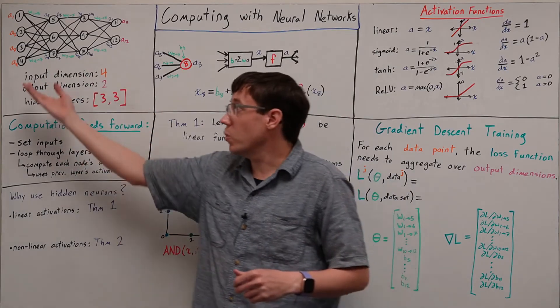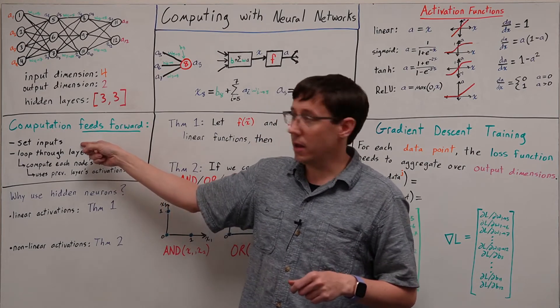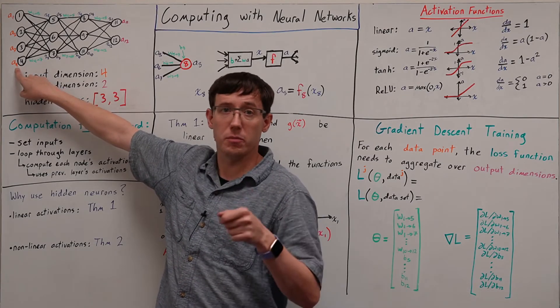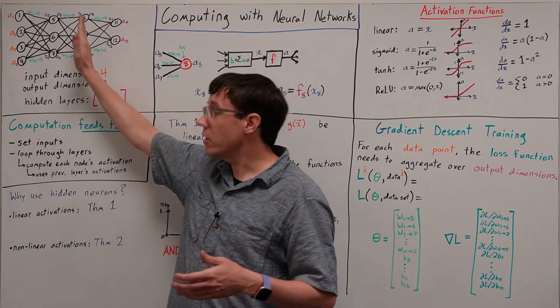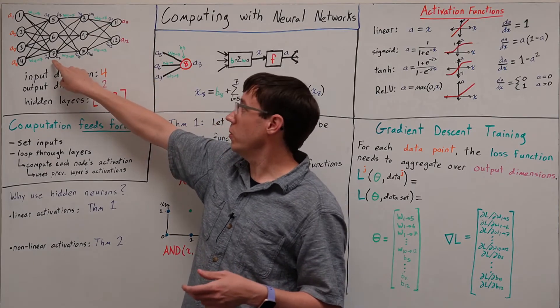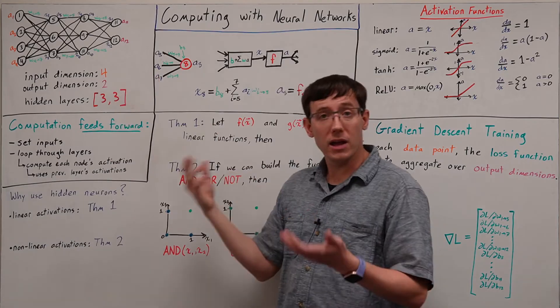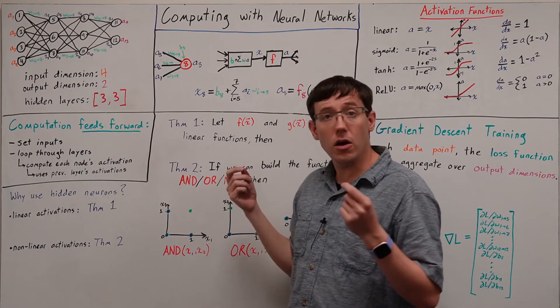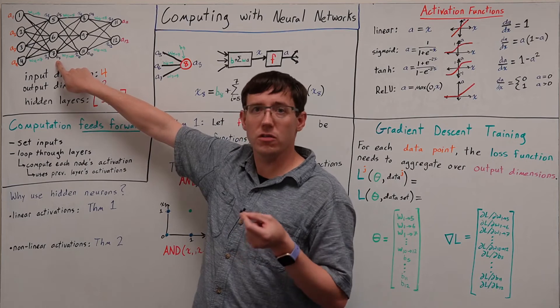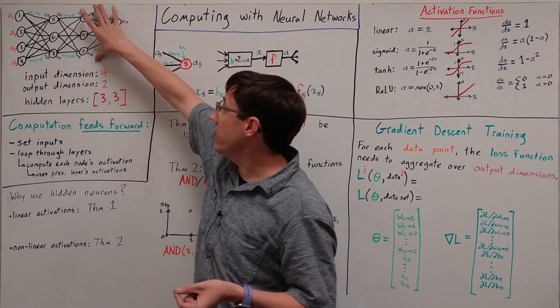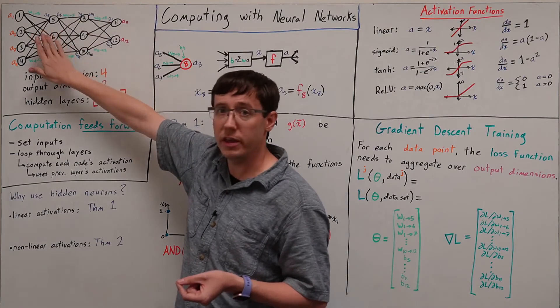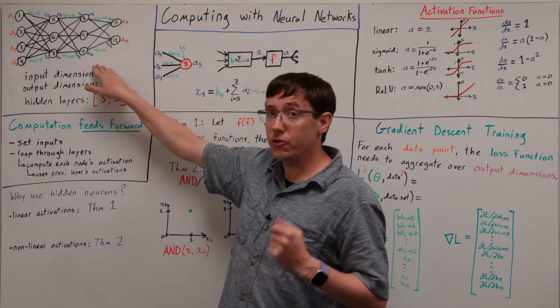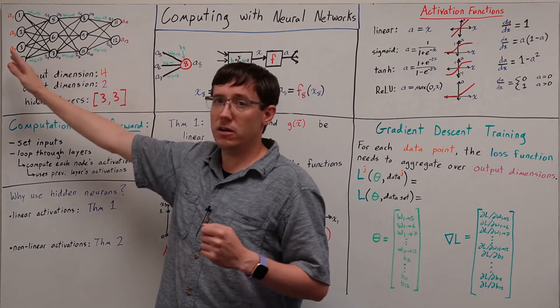So to compute a prediction with this neural network, we start by setting the activation of the input layer neurons equal to the components of some data point. Then we will loop through the layers of the network, and at each layer, we will compute each neuron's activation. As we know, that computation does a weighted sum of inputs and then applies an activation function. And along the way, we will store the activation that each neuron computes. Because when we get to the next layer, we will need to reference the previous activations to compute our weighted sum of inputs. And it turns out we'll also need those activations when we're performing gradient descent to update the weights.